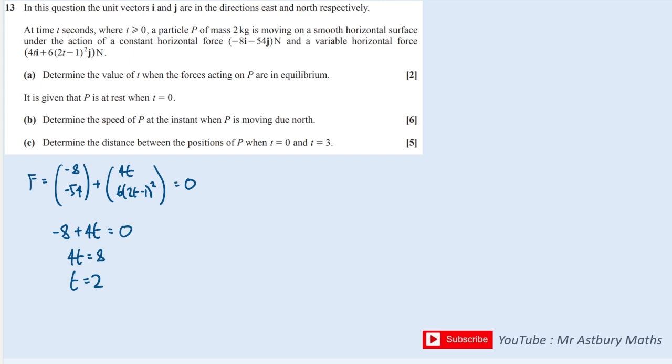It says determine the speed of P at the instant when P is moving due north. We're looking at the speed. In order to find the speed, we're going to have to work out the acceleration first because we can find acceleration since we have force and mass. We know that the sum of the forces equals mass times acceleration.